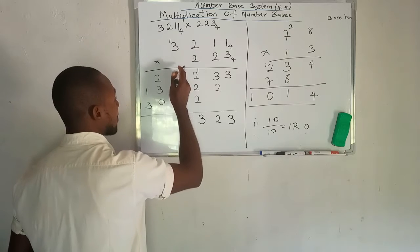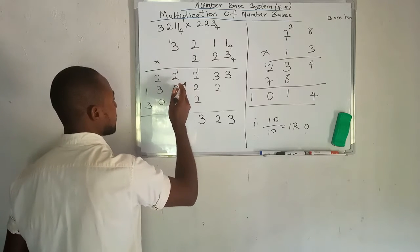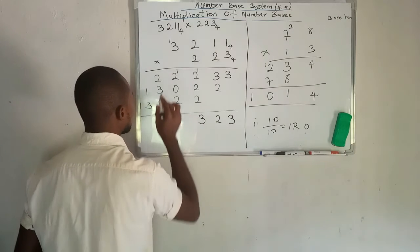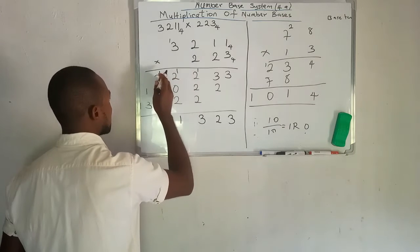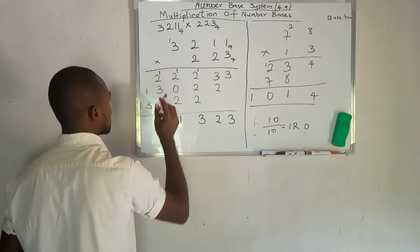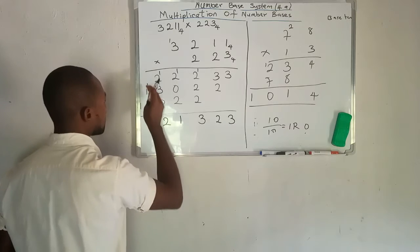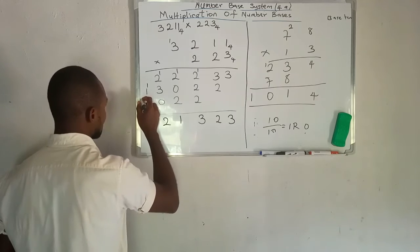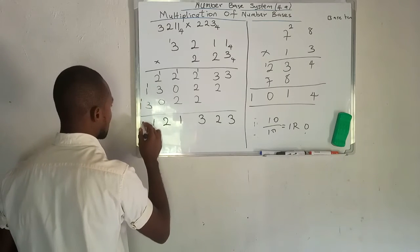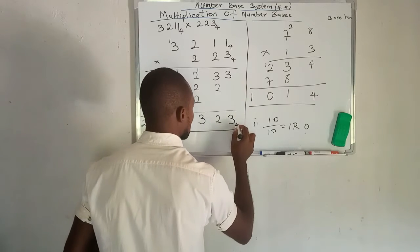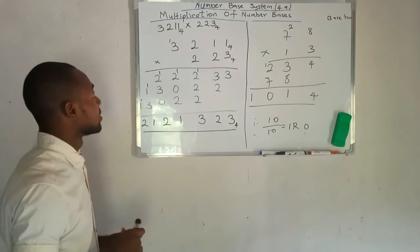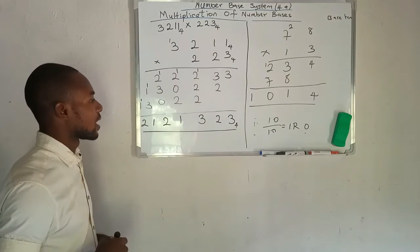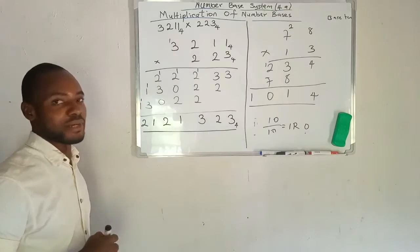So continuing the addition: 4 times 1 plus 2 is 3, plus 0 gives 3, plus 2 gives 5. So 5 divided by 4 gives 1 remainder 1. Then 1 plus 1 here is 2, plus this is 5, giving 5 divided by 4 as 1 remainder 1. Then 1 plus 1 is 2. So 3,2,1,1 base 4 times 2,2,3 base 4 equals 2,1,2,1,3,2,3 base 4.